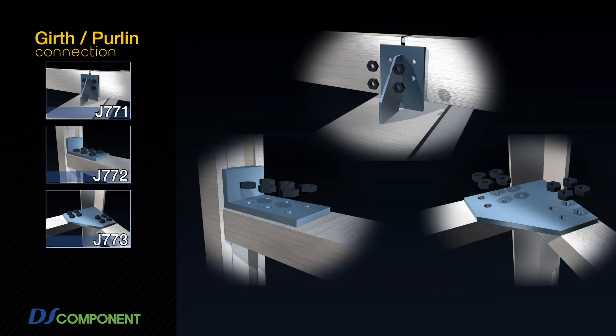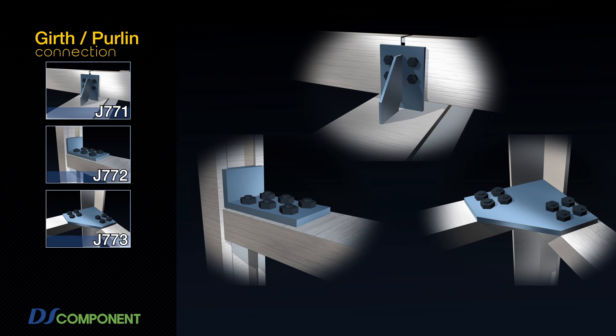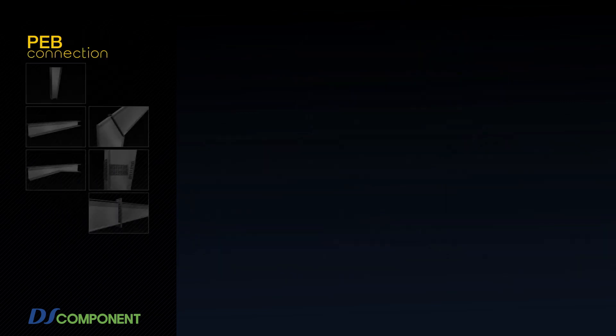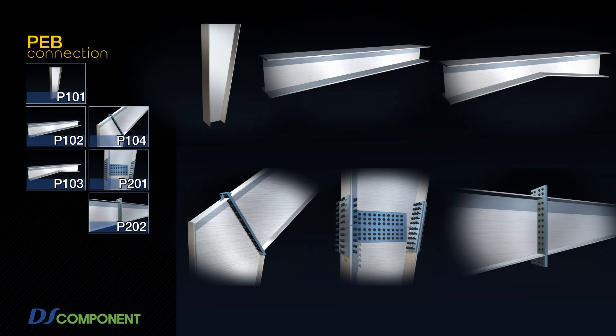DS-Component is used for girth, purlin, opening girth and girth to trim. It is also used for column, rafter, column and rafter, column splice and rafter connection.